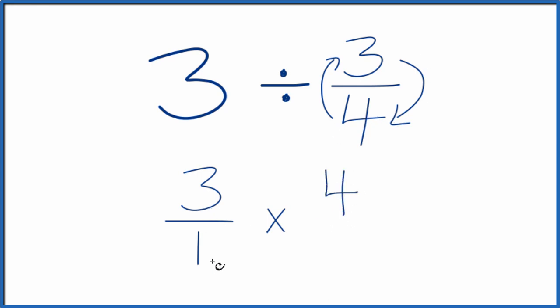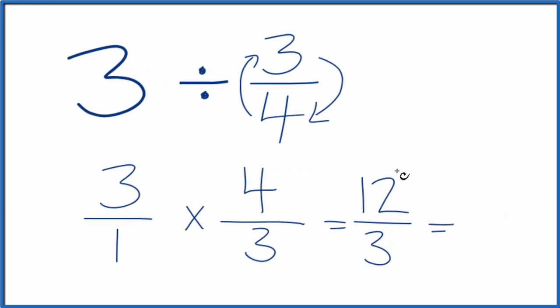So we're going to multiply 3 over 1 times 4 over 3. That's our reciprocal for 3 fourths. And now we just multiply. 3 times 4 is 12. 1 times 3 is 3. So we can divide 12 by 3. We get 4.